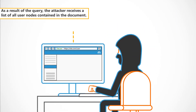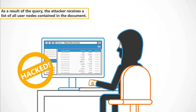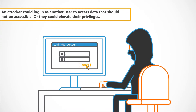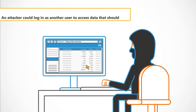The injected code modifies the query and causes it to be valid for every user in the XML file. As a result, the attacker receives a list of all user nodes contained in the document. XQuery Injection vulnerabilities can have significant impact — an attacker could log in as another user to access data that should not be accessible, or they could elevate their privileges.